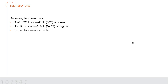For cold TCS foods — time and temperature controlled for safety foods, those high-risk foods including dairy, meats, tomatoes, anything with protein or carbohydrates — time and temperature are the key controls. If cold, it must be 41°F or lower. If hot, it must be 135°F or higher. Frozen foods should be frozen solid, which generally means around zero degrees Fahrenheit or colder.